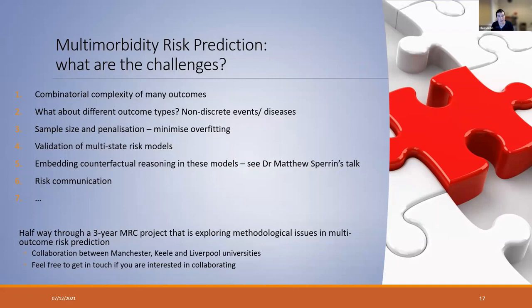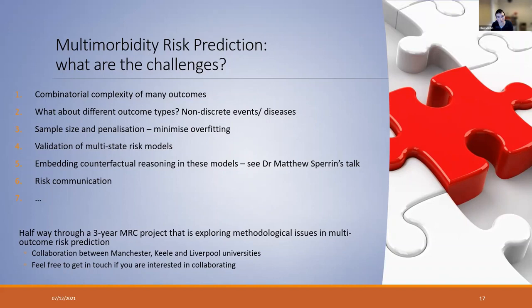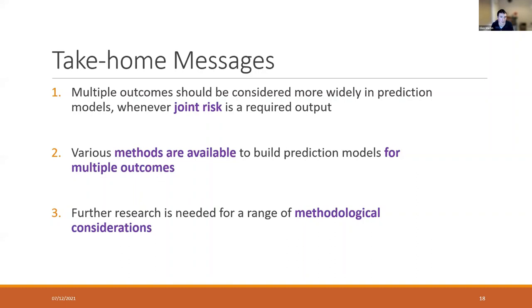There are a range of challenges that are probably preventing both the earlier work in my talk and this third example of multimorbidity prediction. These are things I'm trying to tackle within an MRC project that's about halfway through at the moment. To pick out a couple of salient ones: things like how do we deal with different outcome types — not just whether somebody does or doesn't have a condition, but if diseases are more on a continuum rather than binary. And also linked to what Matt will talk about shortly — how do we then act upon the decisions from these types of models, which requires more counterfactual reasoning.